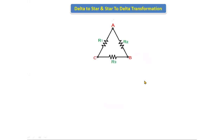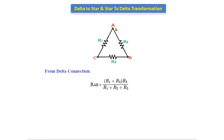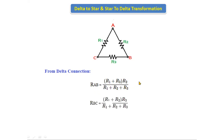Now we will see the derivation of delta-to-star transformation. From the delta connection, with respect to terminals A-B, R1 and R3 are connected in series, and that combination is connected in parallel with R2. Hence we can write: RAB = (R1 + R3)·R2 divided by (R1 + R2 + R3).